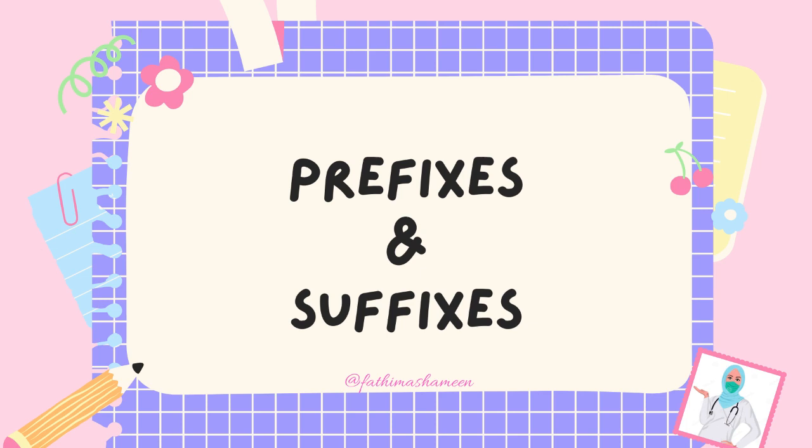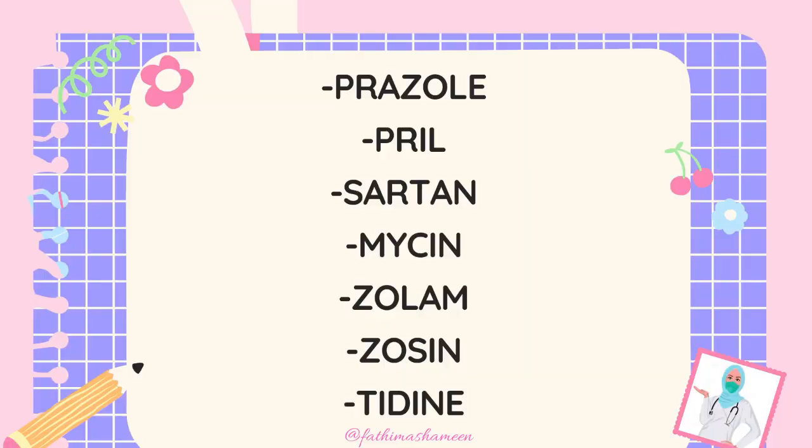Hack number two: learning prefixes or suffixes. In the case of drug names, we have to learn suffixes more. Learning suffixes is one of the best methods to remember drug names — it also helps you learn drug classification as well as their spelling. For example, drugs ending in '-prazole' like omeprazole and pantoprazole; H2 blockers ending in '-tidine' like famotidine; ACE inhibitors ending in '-pril' like enalapril and ramipril; ARBs or sartans like losartan and telmisartan; and macrolide antibiotics ending in '-mycin' like clarithromycin, azithromycin, and erythromycin. Note that not all '-mycins' are macrolides — vancomycin is a glycopeptide antibiotic — so be careful when learning suffixes.